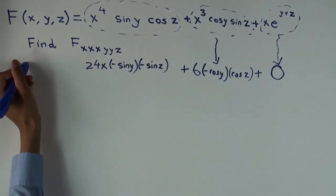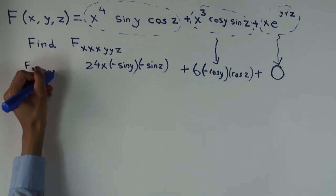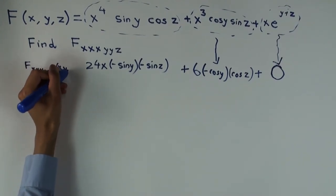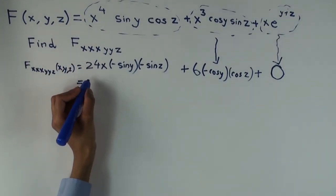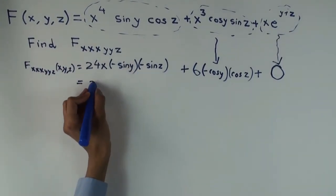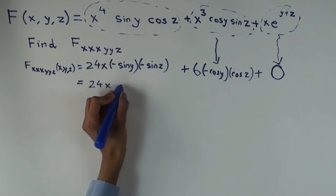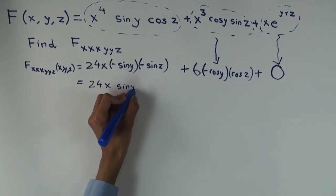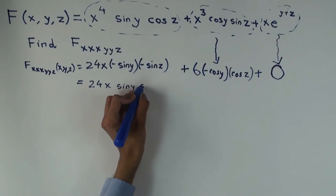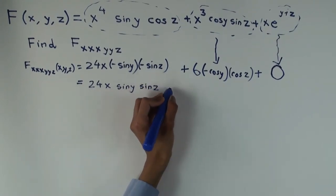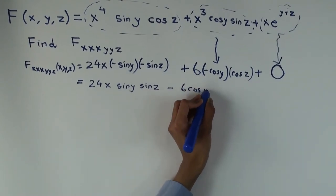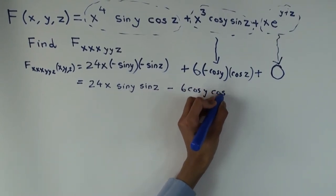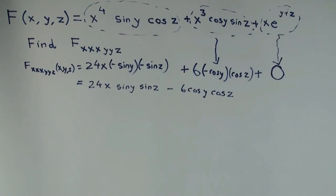So what does this become? So this negative sine z is 24 x. These negatives cancel out. So you get 24 x sine y, sine z, minus 6 cosine y, cosine z. Okay, awesome.